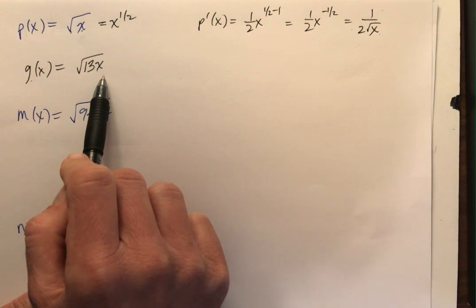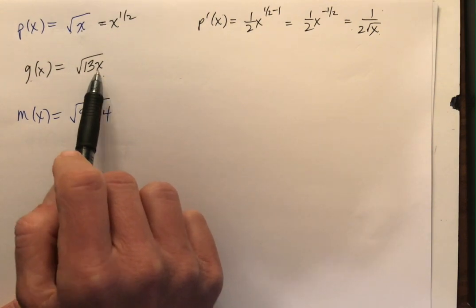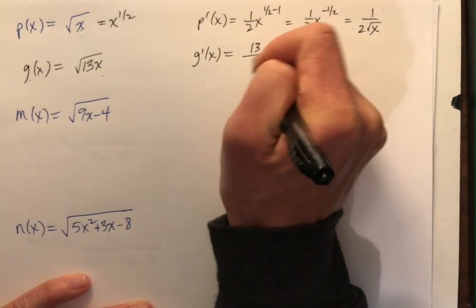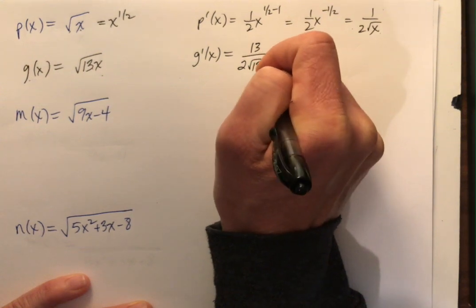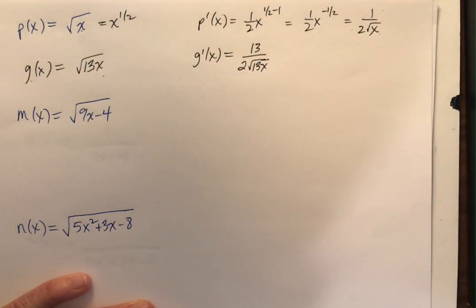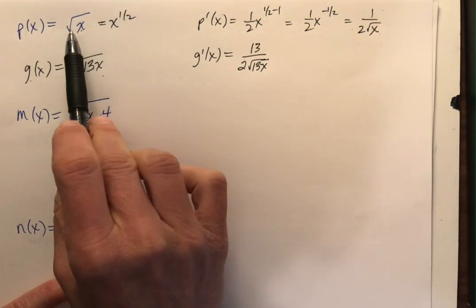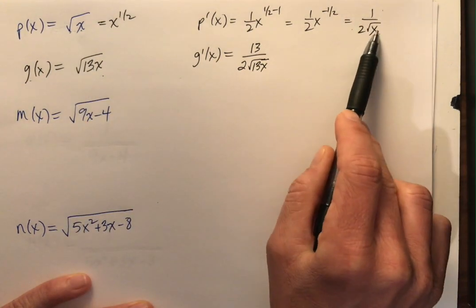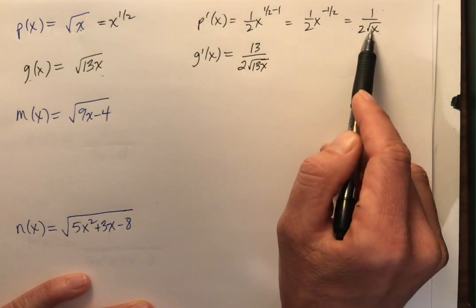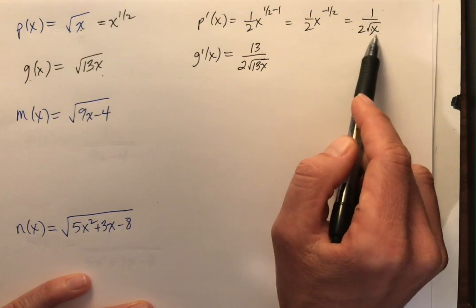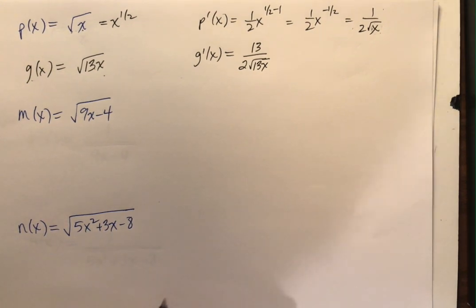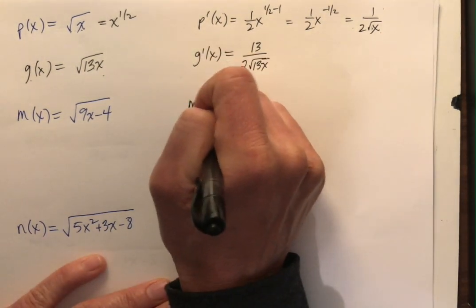Then in the video that we did recently, we saw that g of x is the square root of 13x. The derivative is 13 all over 2 times the square root of 13x. So it's almost as if I treat the square root of x function, the derivative is 1 over 2 times the square root of x. If there is something underneath that radical, I take the derivative of that radical, and it's there. This is a very, very big deal.